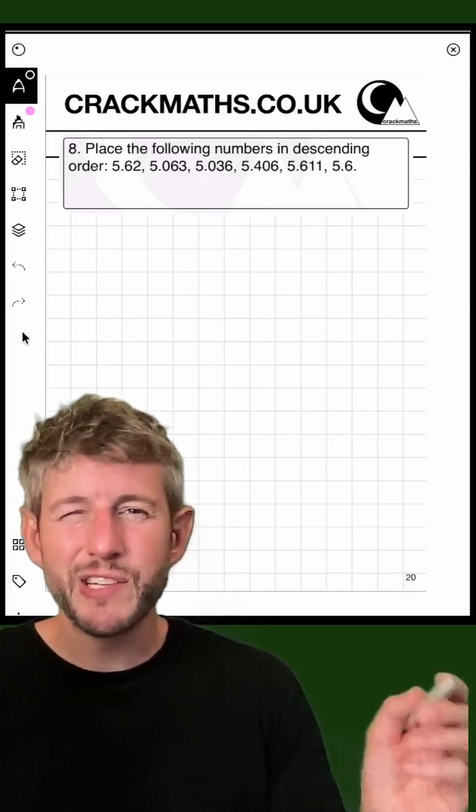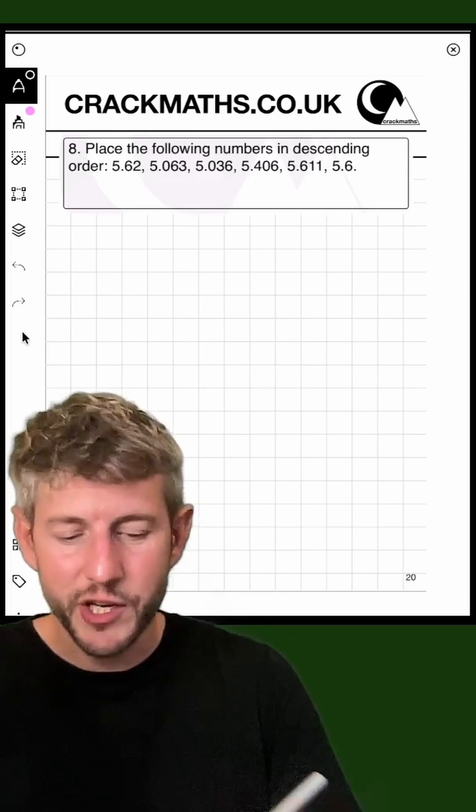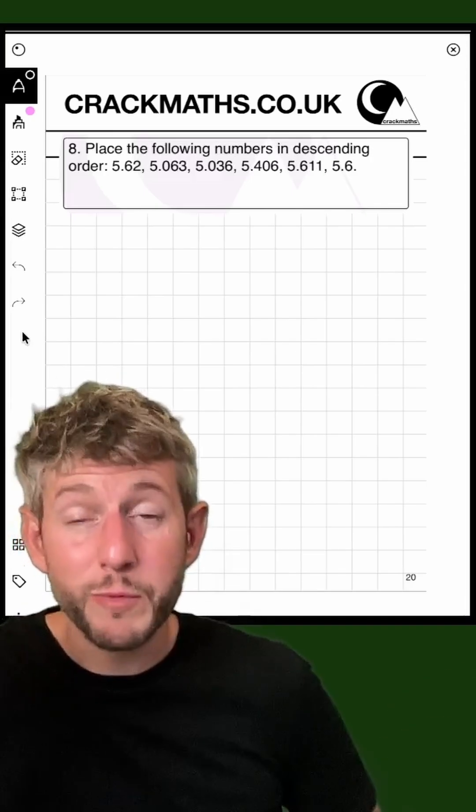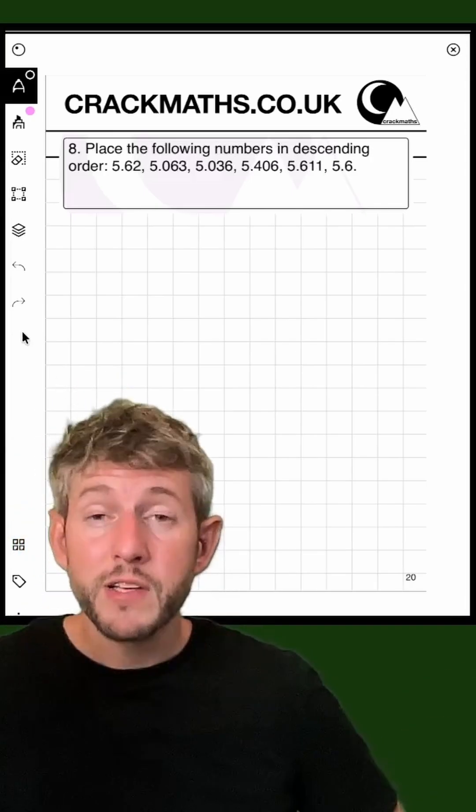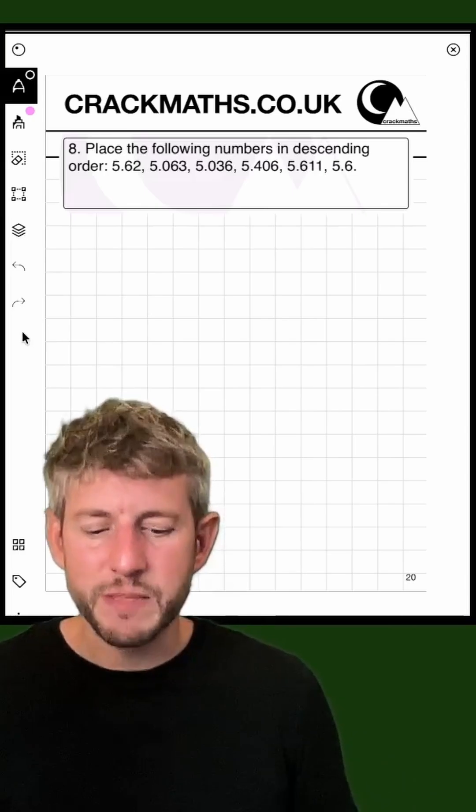However, with decimals, the trick is to remember to get them in the right position. I can see the maximum number of decimal places we have on any of these is 3, so I'm going to make them all have 3 decimal places.